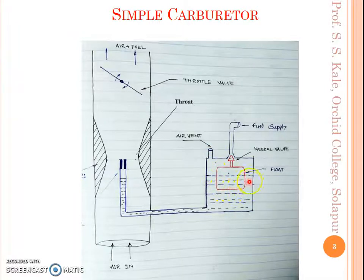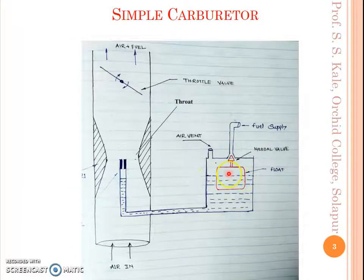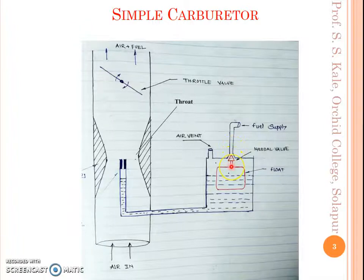This particular portion is called the float of the carburetor. The float is generally made of plastic or copper and has air inside it, so it always floats over the fuel. The float has a needle valve at the top — this needle valve can close or open the fuel supply. When the float moves upward the fuel supply gets closed, and when it moves downward the fuel supply gets opened. Opening and closing of the fuel supply is controlled by the needle valve and float.